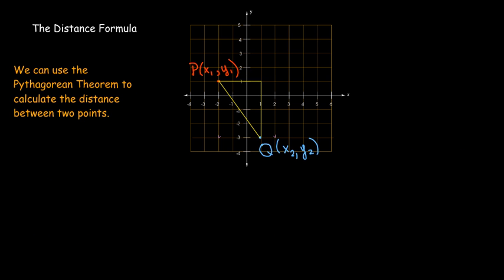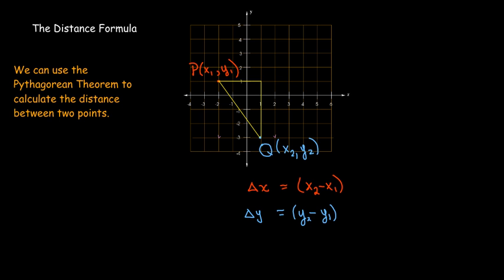Now suppose that instead of fixed numbers, I have two generic points P and Q. I'll use subscripts to identify them: x₁ and y₁ are the coordinates of the first point, and x₂ and y₂ are the coordinates of the second point. Using the Pythagorean theorem, delta x is the difference in the x-coordinates, and delta y is the difference in the y-coordinates. Putting that into the Pythagorean theorem gives a formula for the distance between any two general points.